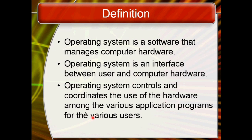Operating systems have many definitions. Here we have three definitions. First, an operating system is a software that manages computer hardware. Second, an operating system is an interface between the user and computer hardware.